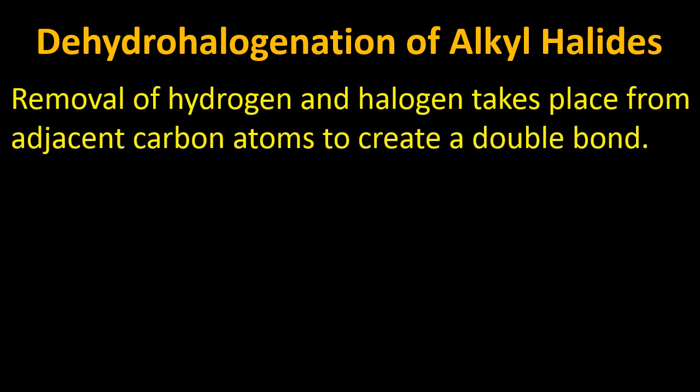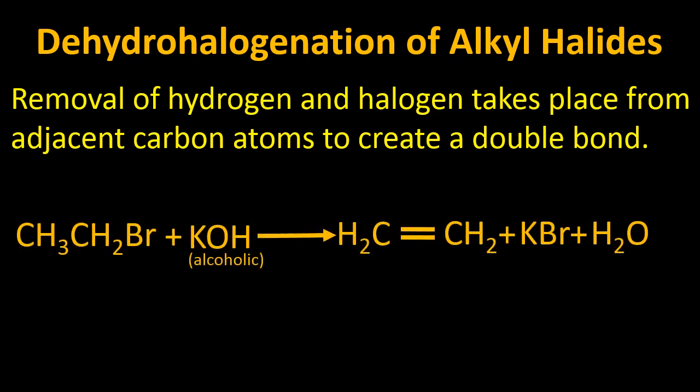Now the other way is dehydrohalogenation of alkyl halides. De means to remove. And what we have to remove? We have to remove hydrogen and halogen. For this reaction, we have to take alkyl halides in the reactants. In this case, alkyl will give hydrogen atom and halide will give halogen. So removal of hydrogen and halogen takes place from adjacent carbon atoms to create a double bond, to create alkene.